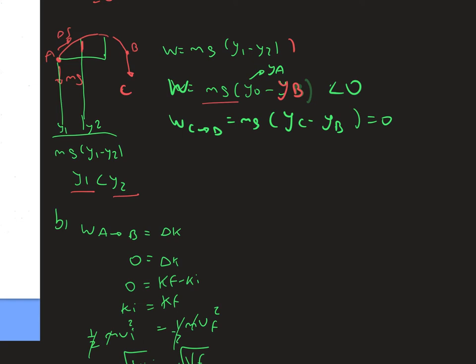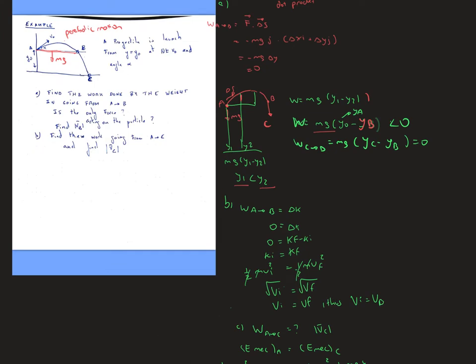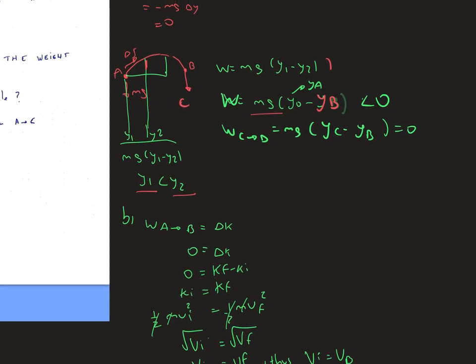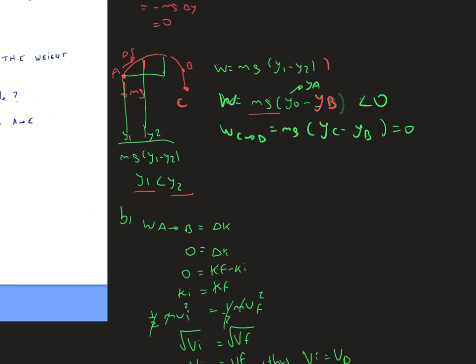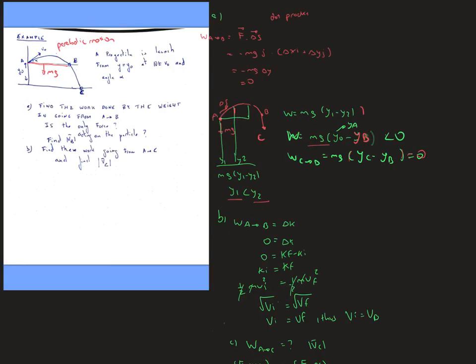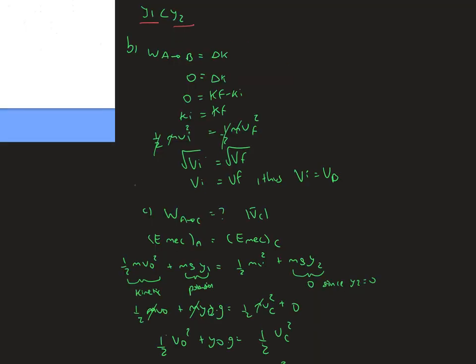In this case, y1 is less than y2, so when we multiply by mg, it's going to give us a negative value. With that information, we can say that the work from point C to point B, as the projection continues, is mg times yC minus yB, which is going to be 0. Overall, we can say that the work from point A to point B equals 0 based on the previous evaluation.